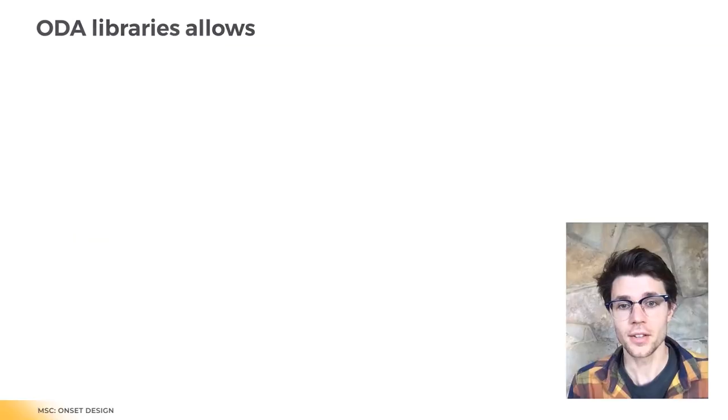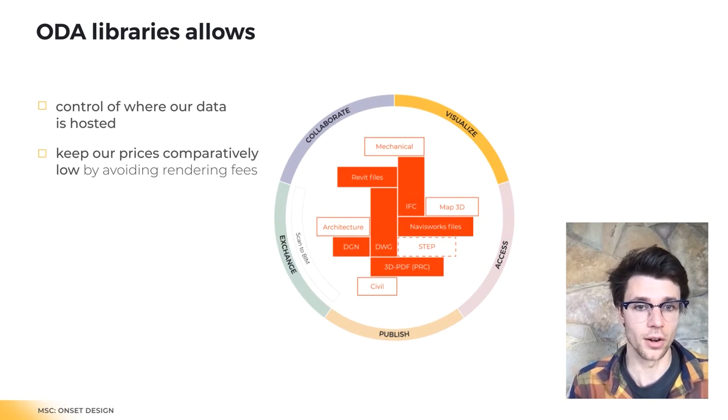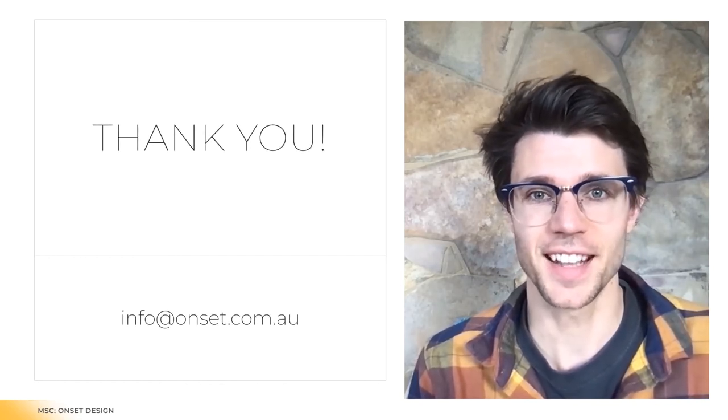Alternative methods for 3D model viewing come with trade-offs, like requiring models to be stored in a separate cloud repository — which is problematic for data sovereignty — or per-model rendering fees that drive up total cost of ownership. By using the ODA libraries, we maintain control of where our data is hosted and keep our prices low by avoiding rendering fees. Going forward, we aim to further use the IFC and Revit SDKs to unlock smart data captured in models, making it available to all users.